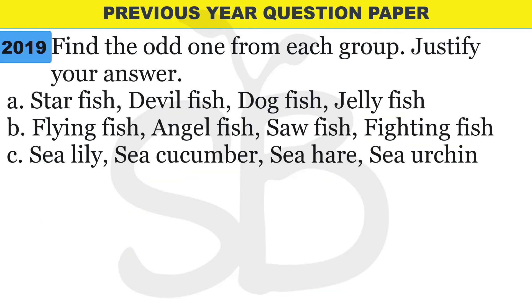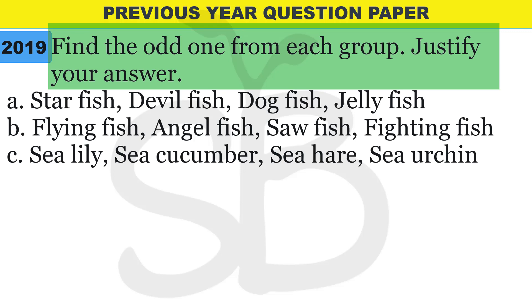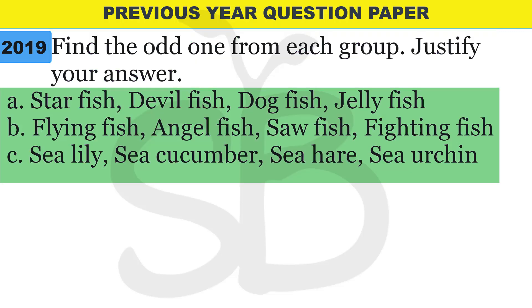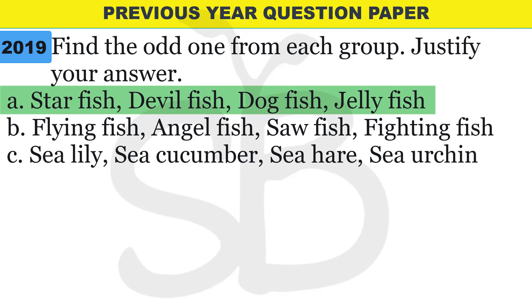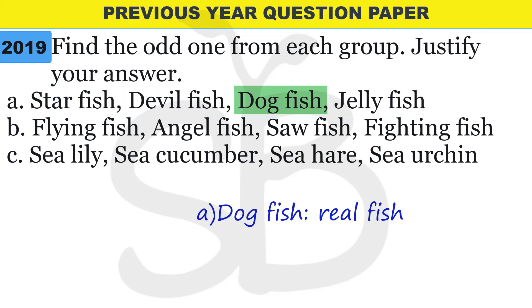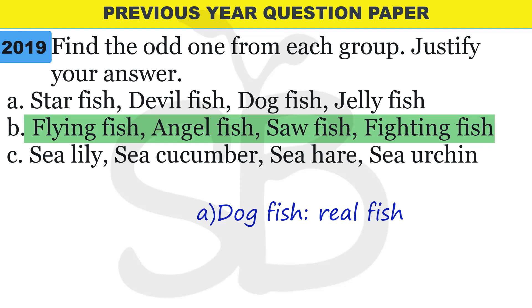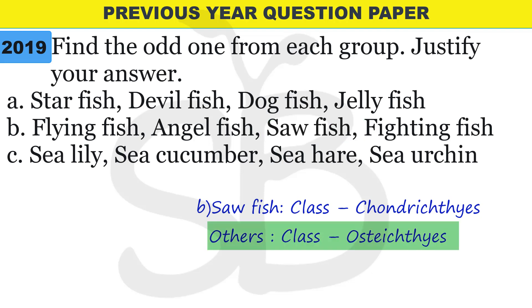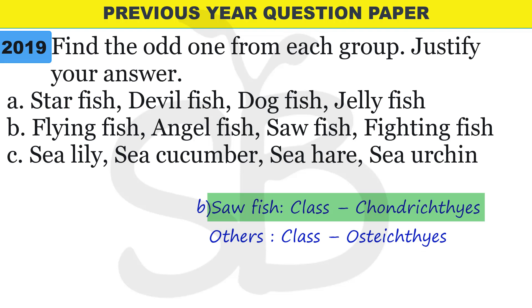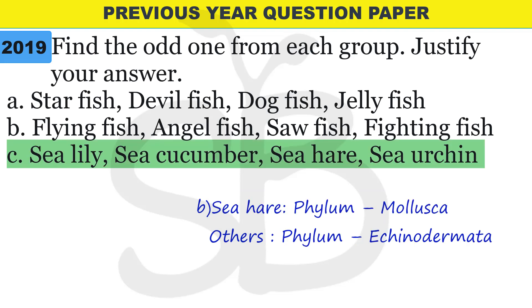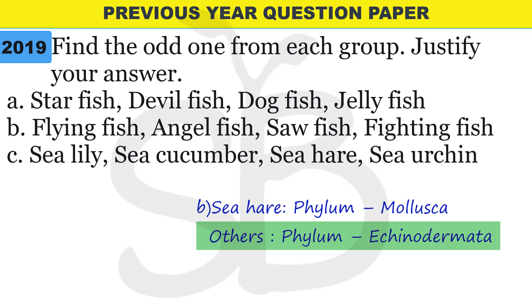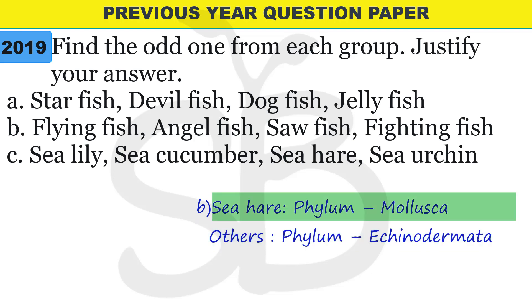Next question from 2018: find the odd one from each group and justify your answer. First group: Starfish, Devilfish, Dogfish, Jellyfish - the odd one is Dogfish, because Dogfish is actually a shark (a real fish), while the others are not true fish. Second group: Flying fish, Angelfish, Sawfish, Fighting fish - Sawfish is the odd one. Third group includes members of phylum Echinodermata; Sea hare is a member of phylum Mollusca.